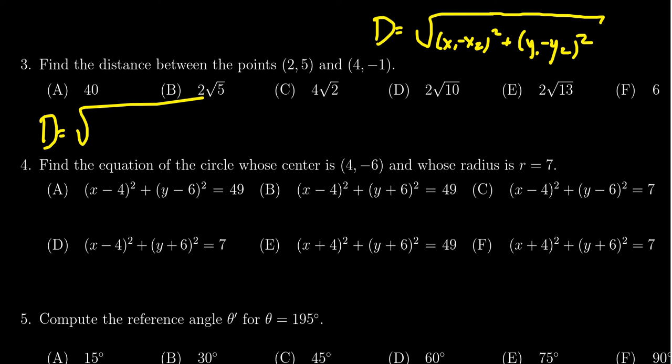Using the specific numbers here we're going to get (2-4)² + (5-(-1))². That's a double negative so it's actually going to be a positive - you're going to get 5+1.